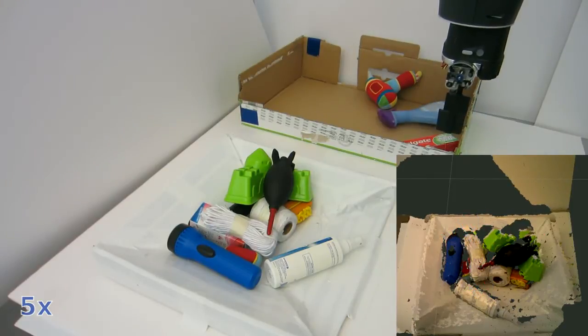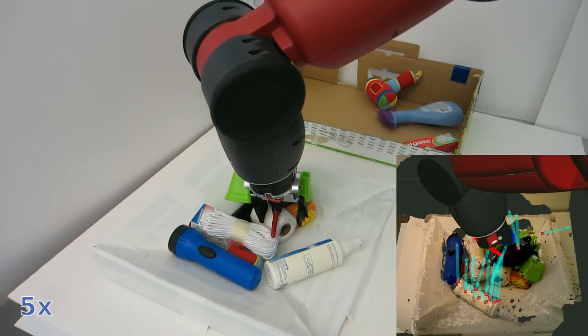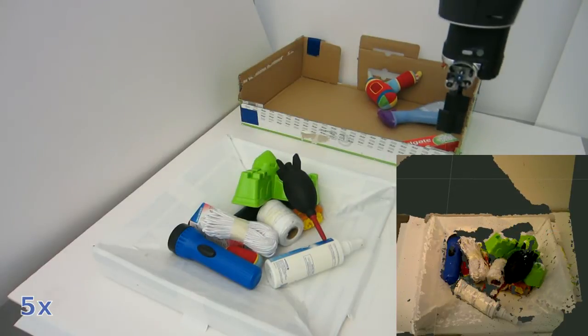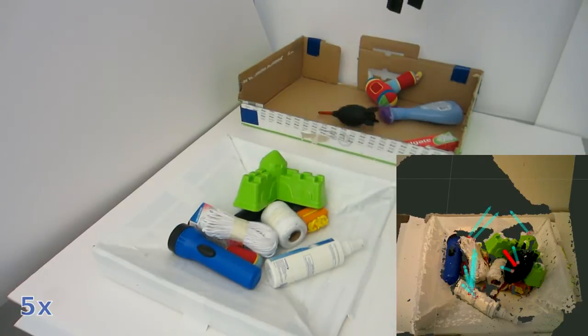Our system works by predicting the presence of geometric conditions for an antipodal grasp. First, our system generates a large number of grasp hypotheses. Then, it discards those grasp hypotheses that do not satisfy certain necessary geometric conditions.